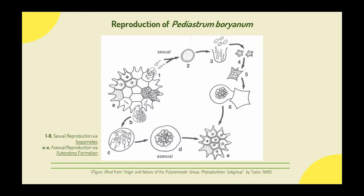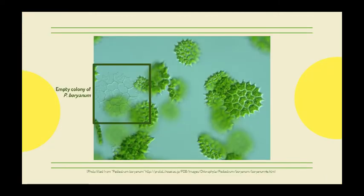In sexual reproduction, biflagellate isogametes are liberated individually from the parental cell. The gametes fuse together to form a zygote, which will then germinate to produce and release zoospores. Each zoospore further develops into a thick-walled polyhedral unicell called a polyeder. The single nucleus of the polyeder undergoes a series of nuclear divisions to form a second generation of uninucleate zoospores. The polyeder wall cracks and the zoospores are released but remain inside a vesicle, just like in asexual reproduction. The zoospores undergo further development to become a new coenobium. Once all the cells in a parent colony have formed their own colonies, an abandoned skeleton of the parent colony is left, as shown in the figure.